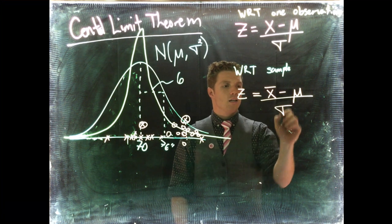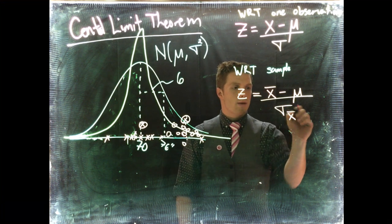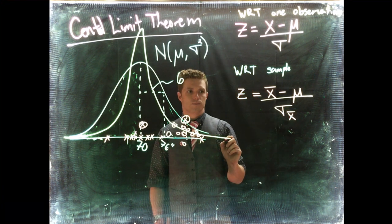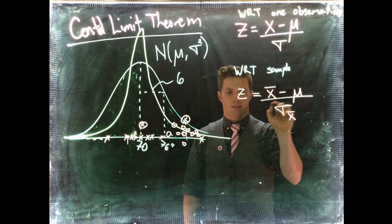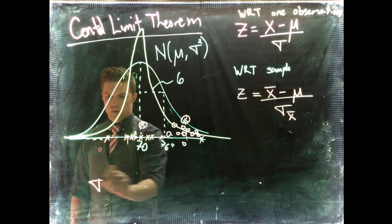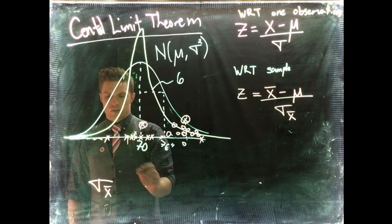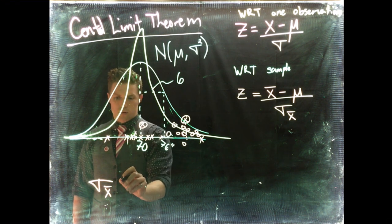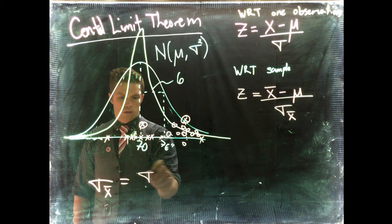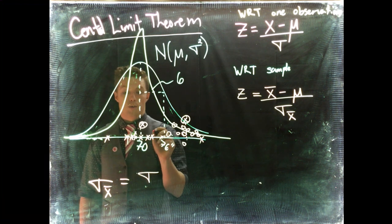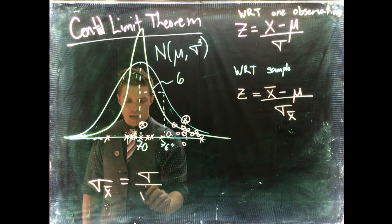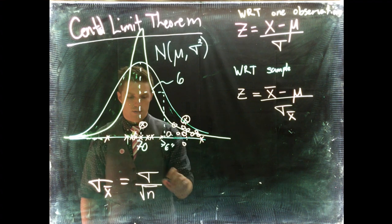But what we divide by is going to be the standard deviation with respect to the sample mean. We need to know how do we get there. The standard deviation with respect to our sample is equal to the standard deviation of the population divided by the square root of the sample size.